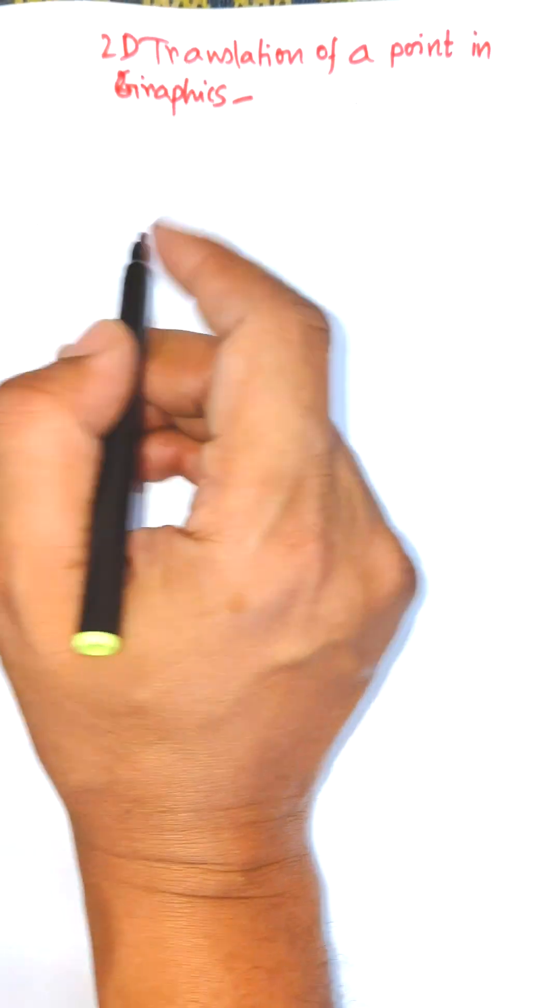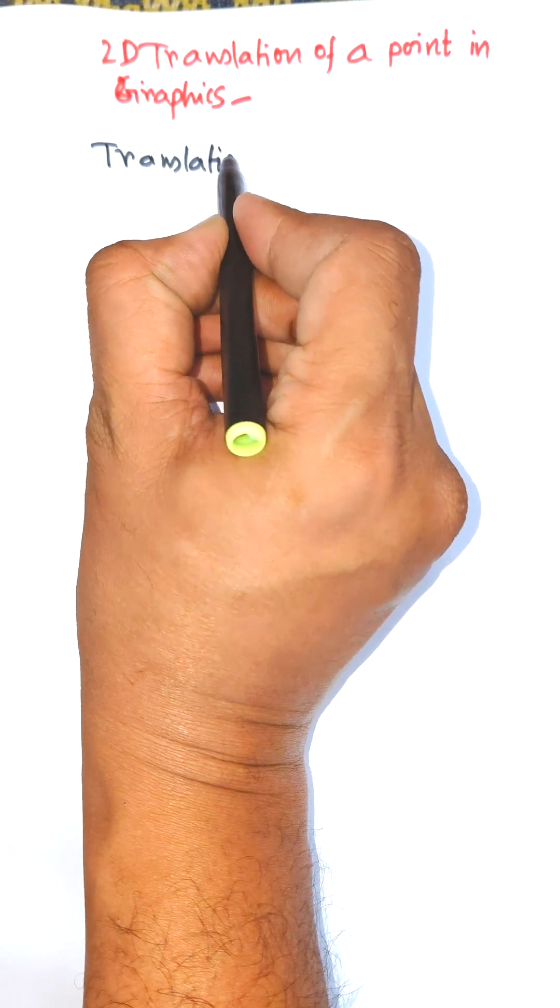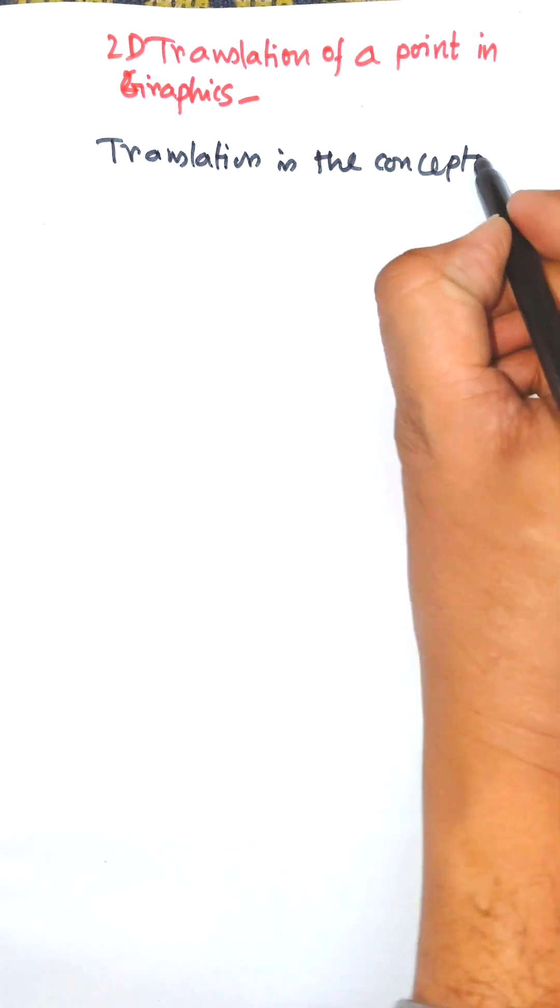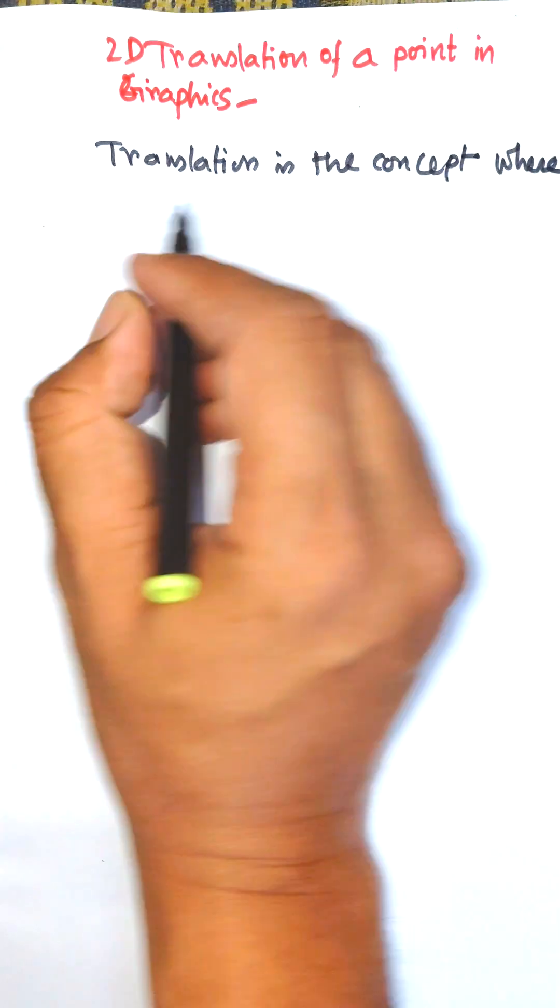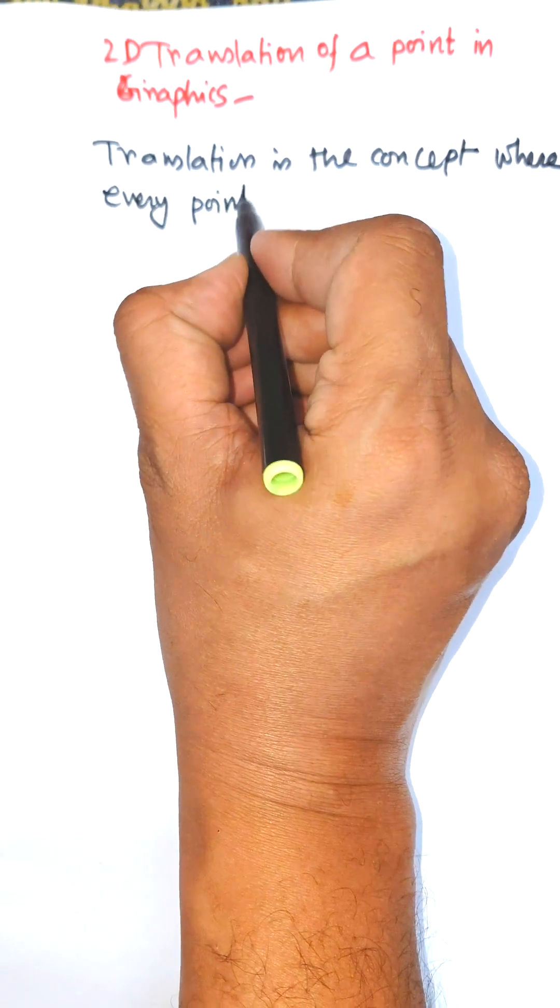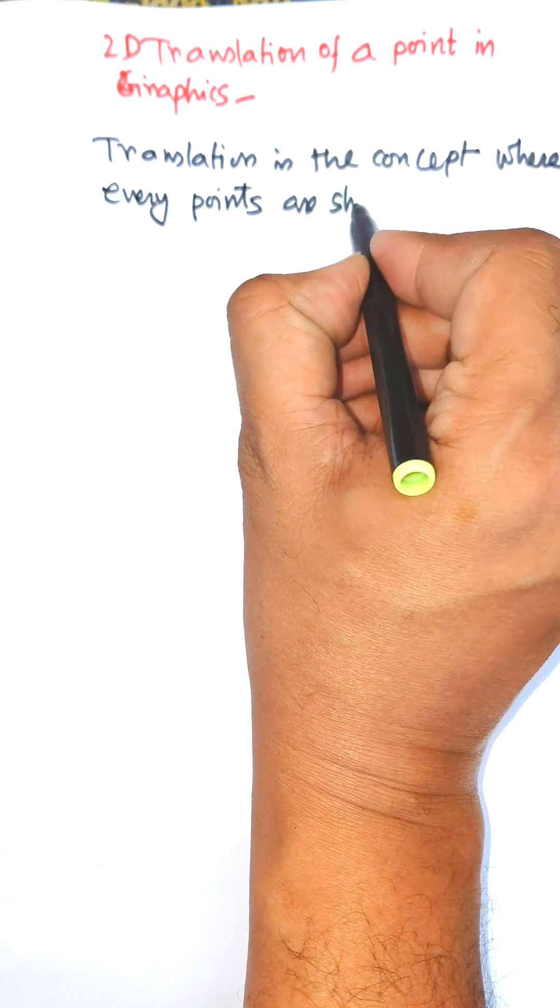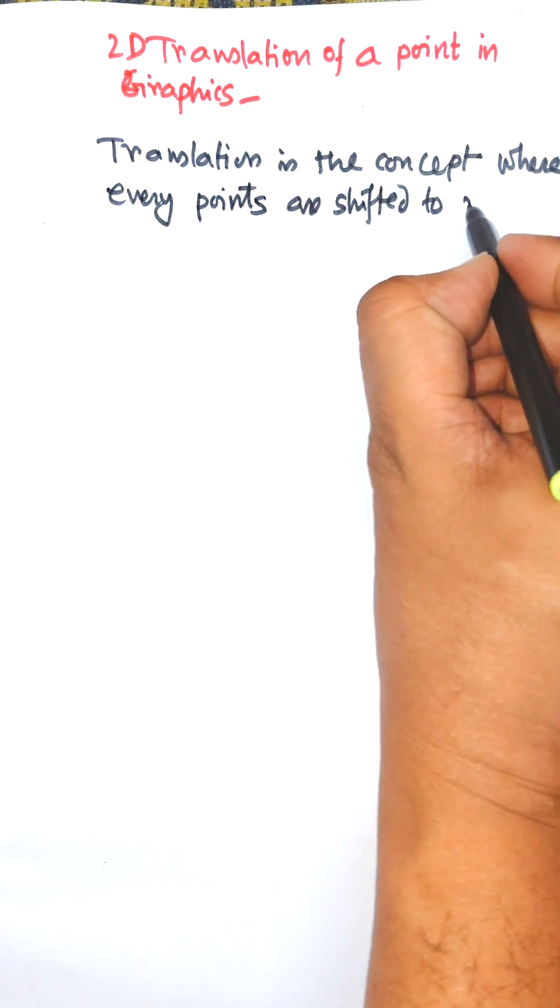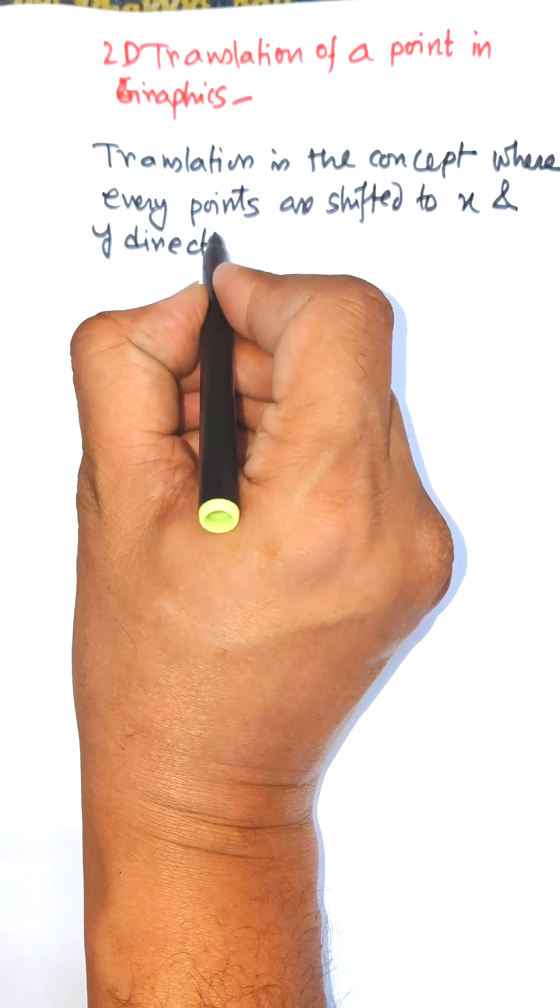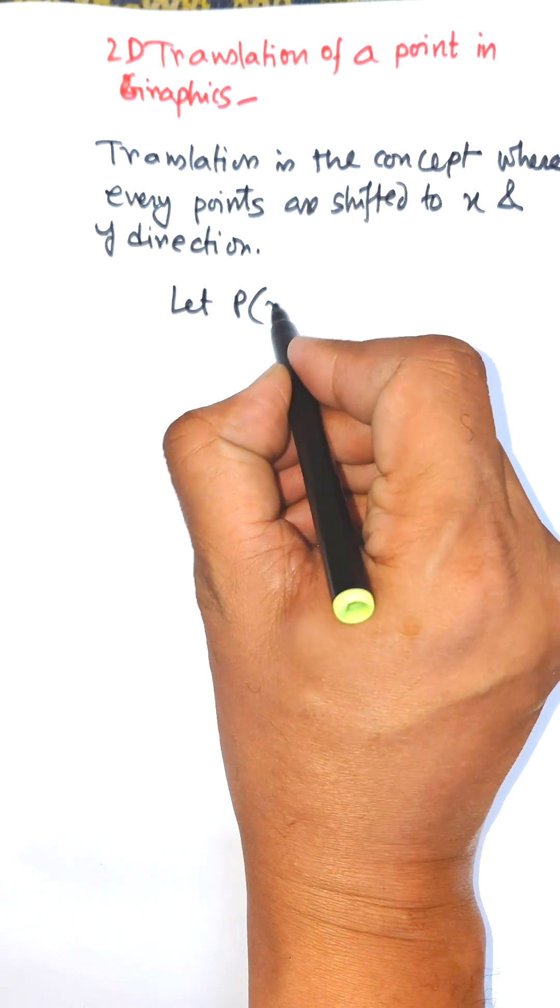Translation is the concept where every point is shifted in the x and y direction. Let us consider the point P(x, y) as the given point.